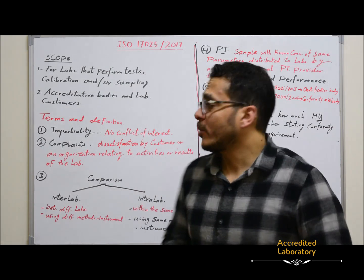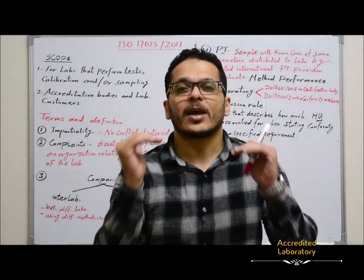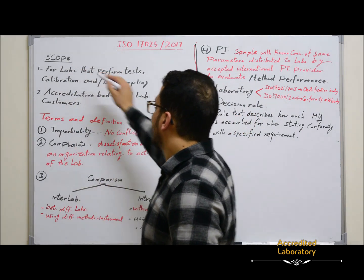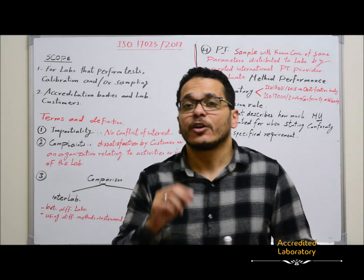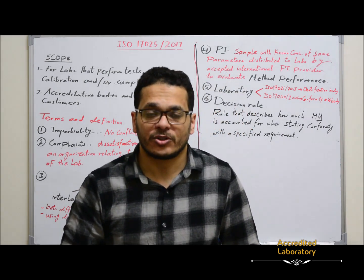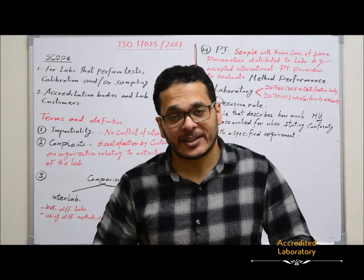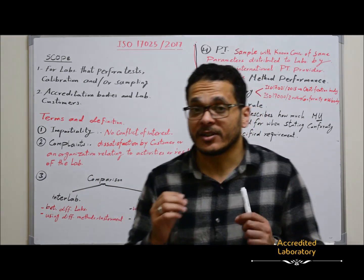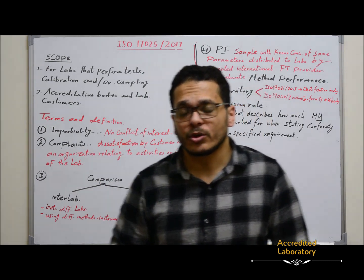In this lecture we will start explaining the scope of this document — for whom it is applicable. This document is applicable for all laboratories that perform tests, calibration, and/or sampling, and specifies requirements for competency, impartiality, and all operations in the laboratory to ensure they are competent enough to perform activities according to international guidelines and are able to get accurate and reliable results.